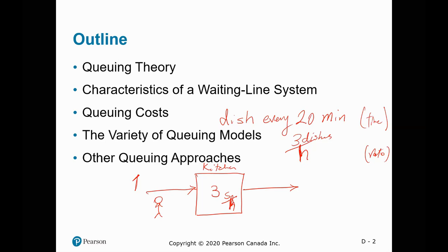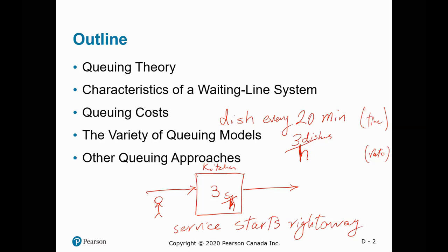When he arrives, we start serving him right away — he shouldn't wait. If two people arrive every hour, we can serve them easily, so there would be no build-up. If three arrive, we still seem to be able to serve them.